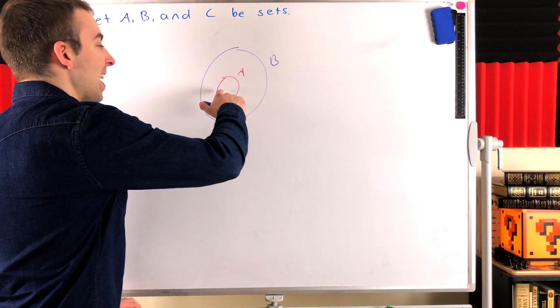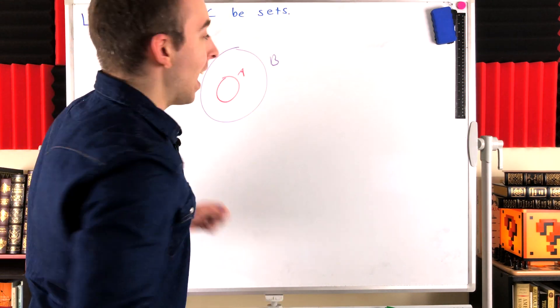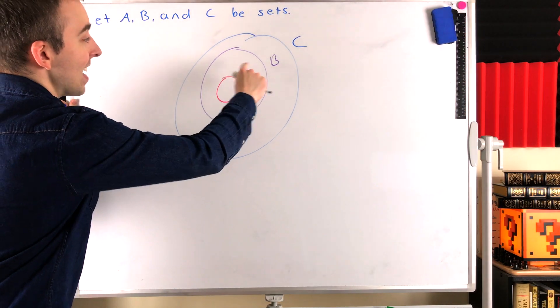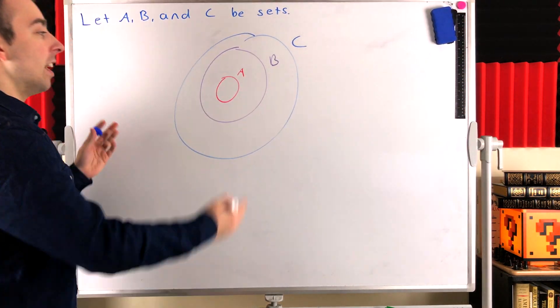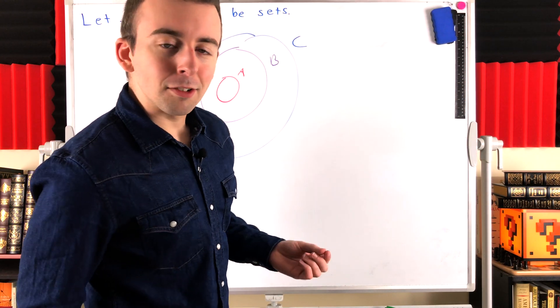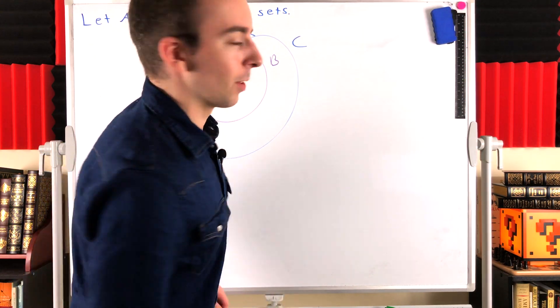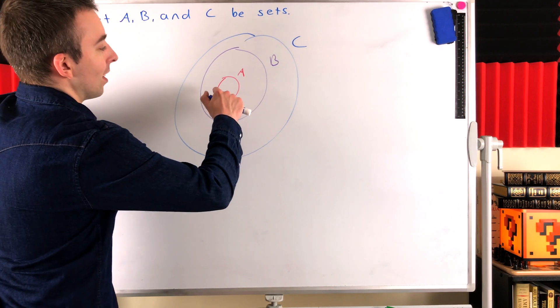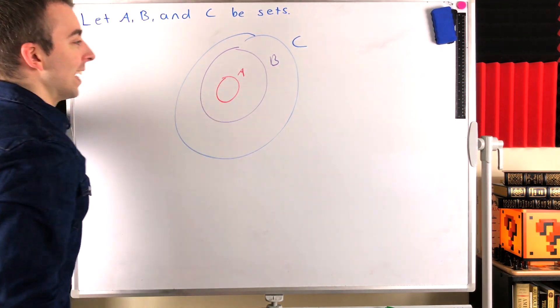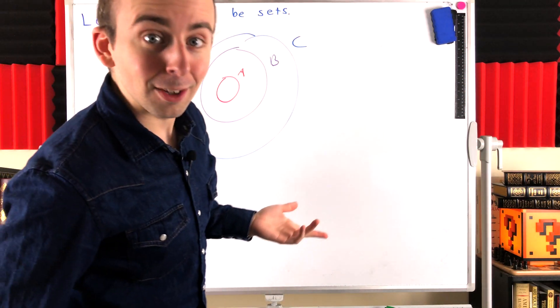How about transitivity? Well, certainly, if A is contained within B, and B is contained within some other set C, obviously, A is also contained within C. So, that makes sense that transitivity holds, but there's no reason to suspect that the symmetric property would hold. There's no reason to think that just because A fits in B, that B should also fit in A. And certainly,